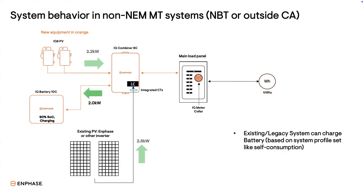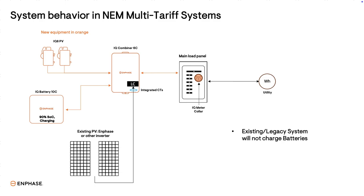The IQ battery is charging at 2 kilowatts, the loads are using 1.2 kilowatts, and the remaining 1.5 kilowatts is being exported to the grid. In California, NEM multi-tariff rules apply: legacy systems can't charge batteries, and the new PV and battery of the expansion system cannot export to the grid. In this example, the expansion PV system is producing 2.2 kilowatts; 1.2 kilowatts is being used by the loads and the battery is charging at a reduced rate of 1 kilowatt. The expansion system isn't exporting any power to the grid. The existing PV system is producing 2.5 kilowatts, and all 2.5 kilowatts is being exported to the grid — significantly more than the previous example — thereby earning the homeowner higher export credits under their NEM 1 or NEM 2 agreement.